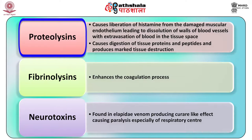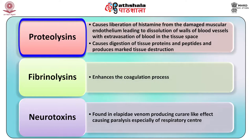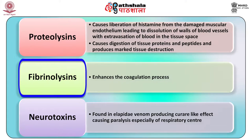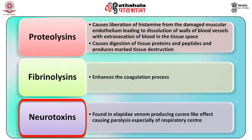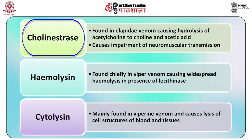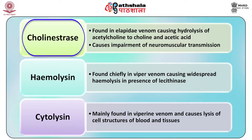Starting with the venom components: first is proteolysins, which cause liberation of histamine from the damaged muscular endothelium leading to dissolution of walls of blood vessels with extravasation of blood in the tissue space, and also cause digestion of tissue proteins and peptides with marked tissue destruction. Next is fibrinolysin, which enhances the coagulation process. Third are the neurotoxins, mainly found in elapid venom, producing a curare-like effect causing paralysis especially of the respiratory center. Next is cholinesterase, also found in elapid venom, causing hydrolysis of acetylcholine to choline and acetic acid, thus impairing neuromuscular transmission.